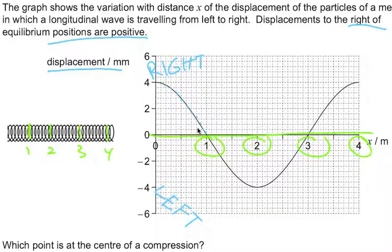So the 1 has 0 displacement. That means position 1 is displaced in no way from its equilibrium. But to answer whether or not 1, 2, 3, or 4 is a compression,